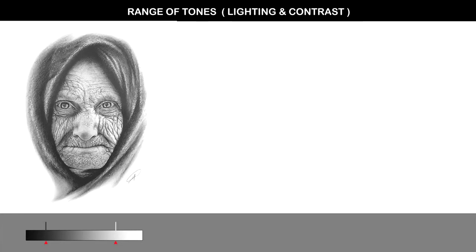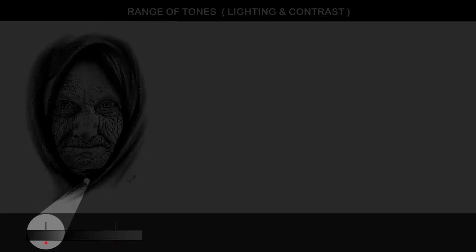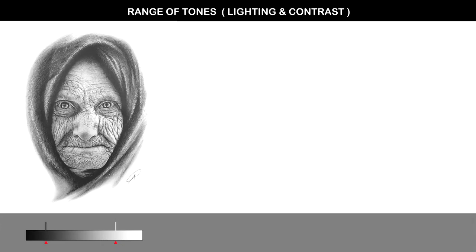Let's look at an example. Here's one of my drawings which I've edited in Photoshop just to show you what I mean. In this first image, I've reduced the contrast so that the darkest part of the drawing is not 100% black and the lightest part is not 100% white. You can see on this scale that the darkest and lightest parts sit in the middle. I guess it still looks okay, but to me it's too flat.